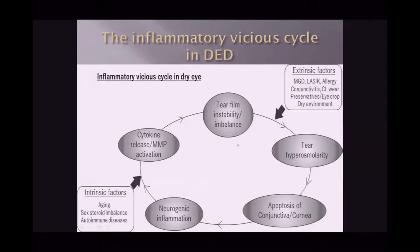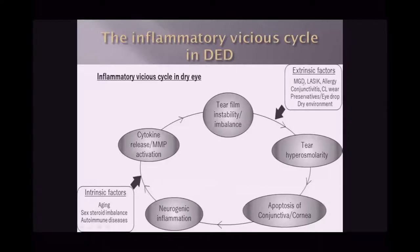Inflammation disrupts normal neural control of tearing, leading to a continuous inflammatory vicious cycle. This cycle in dry eye disease includes tear film instability, tear hyperosmolality, apoptosis of conjunctival and corneal cells, neurogenic inflammation, cytokine release, and matrix metalloproteinase activation. This vicious cycle can be initiated or exacerbated by extrinsic factors such as meibomian gland disease, LASIK procedures, allergic conjunctivitis, and contact lens wear, as well as intrinsic factors including aging, sex, steroid imbalance, and autoimmune disease.